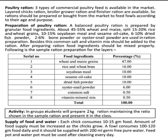One: wheat and maize grain, 47 percent. Two: rice and wheat grain, 16 percent. Three: soybean meal, 10 percent. And sesame oil cake, 10 percent. And dried fish powder, 10 percent. Oyster strain powder, 6 percent. And common salt, 0.50 percent. And vitamin mineral mix, 0.50 percent. Total 100 percent.